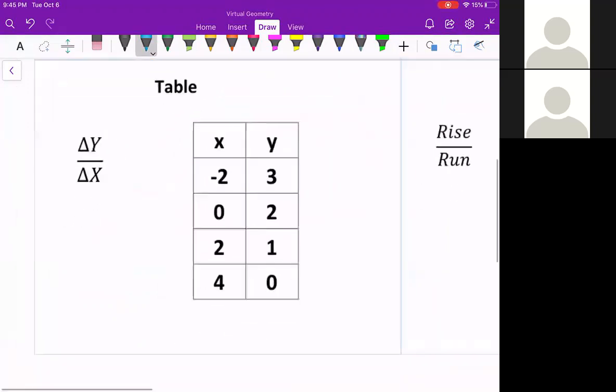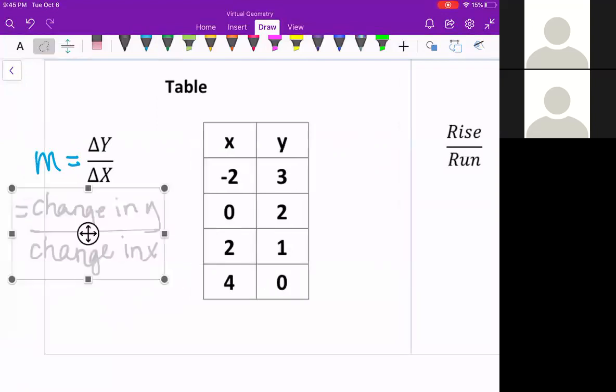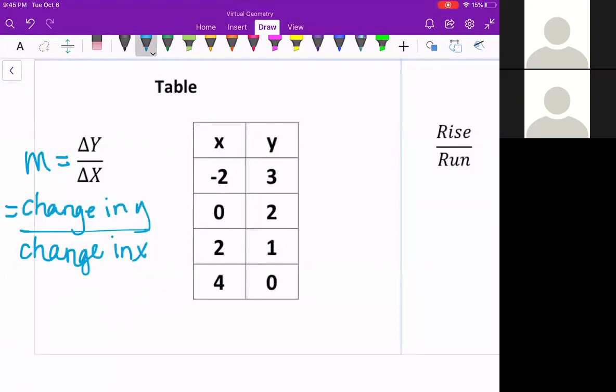Our slope is what we want to find first, which is the triangle y over triangle x or delta y over delta x. Another way to see this is the change in y divided by the change in x. So there's lots of different ways you can see the slope when you're looking at a table. So let's use that and see what is the change in y, meaning what are your y's changing by?